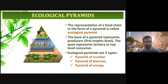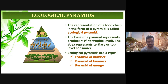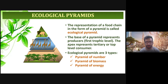It is the representation of a food chain. If a question comes in the exam asking what an ecological pyramid represents, the correct answer is that it represents the food chain. The base of the pyramid represents the producers — the first trophic level. The apex represents the tertiary or top-level consumers.